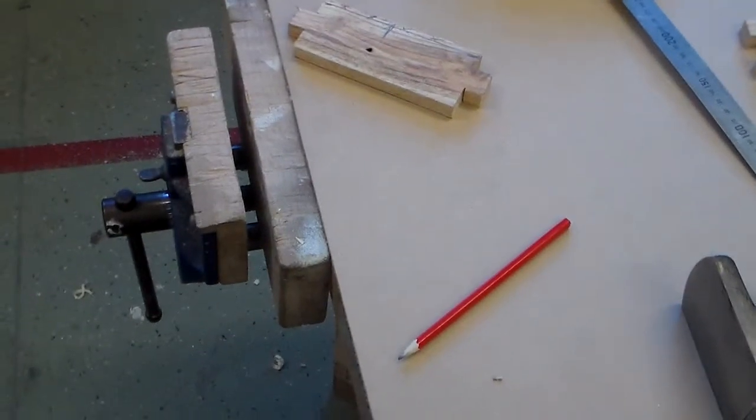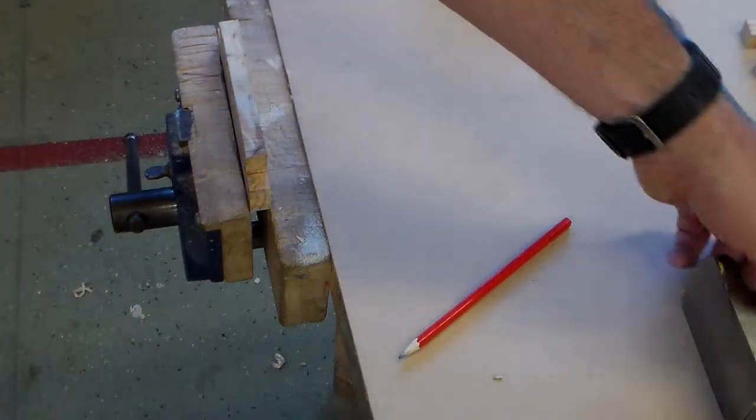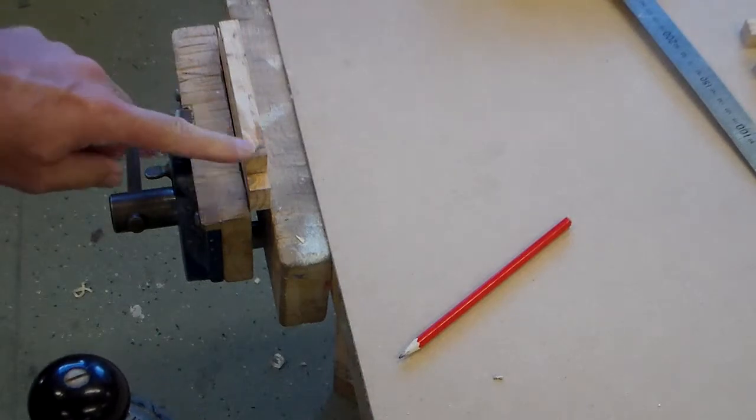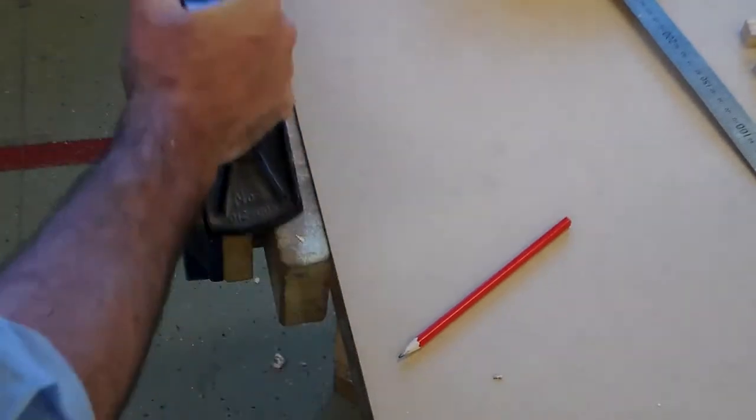So to do that we're going to put our wood in the vise and we're going to use the plane. So we've clamped the wood in the vise, we're going to be removing this edge and we're going to use the plane just pushing along.